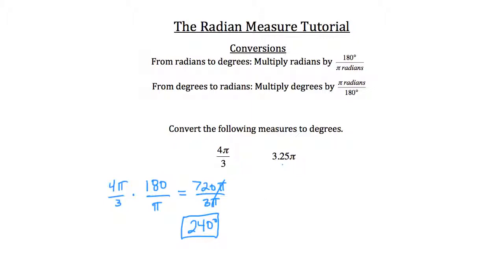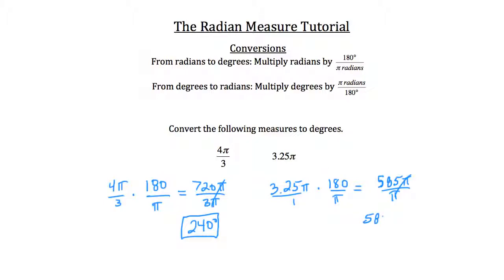Now let's deal with 3.25π. We have 3.25π times 180 divided by π. So 3.25 times 180 is 585, giving us 585π over π. The π's cancel, and 3.25π equals 585 degrees.